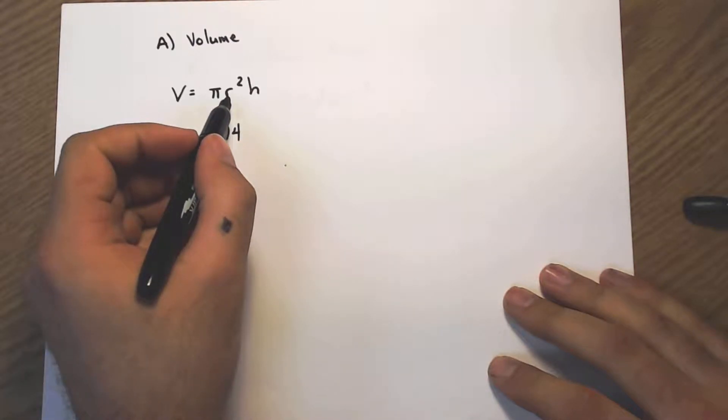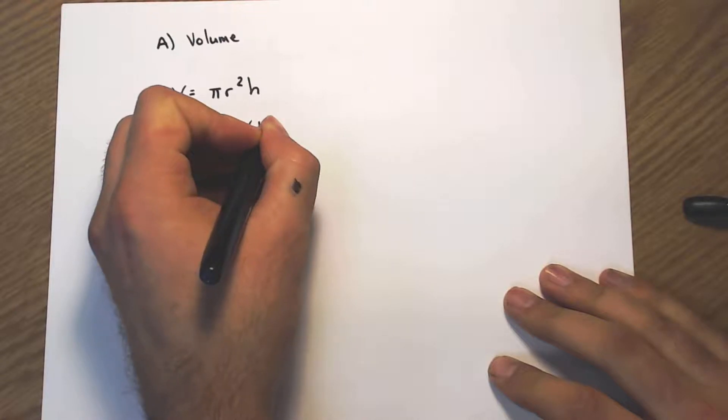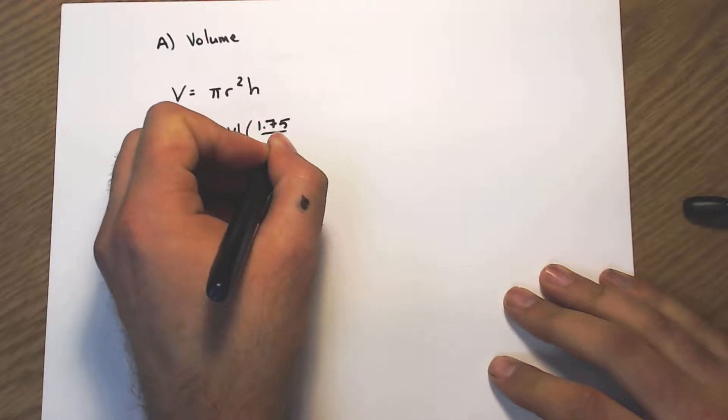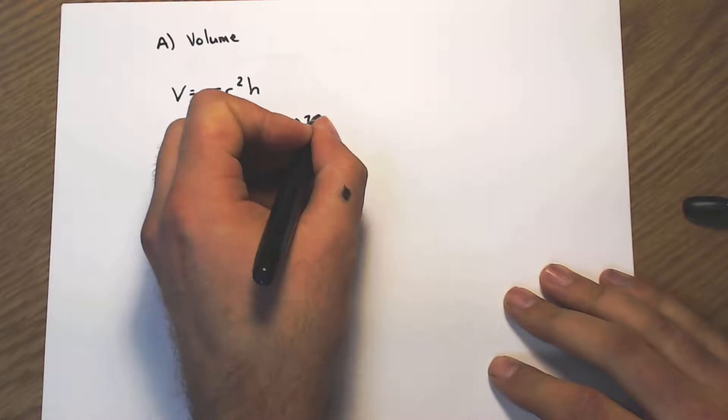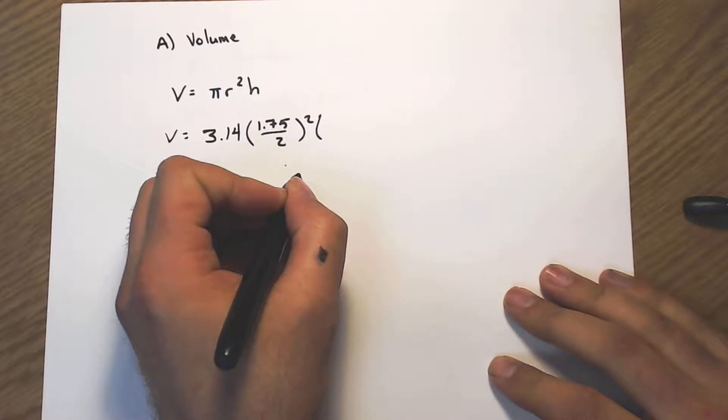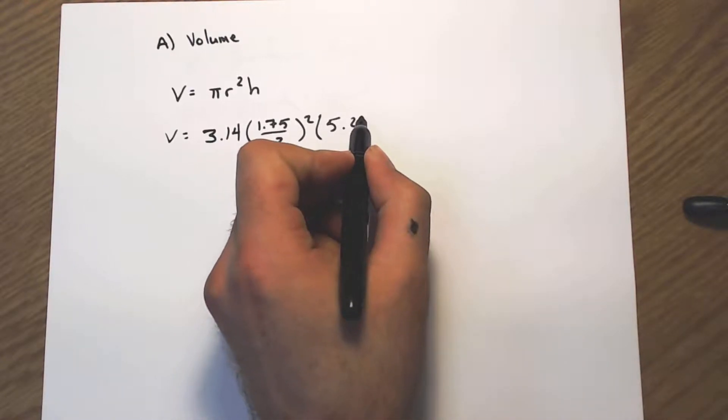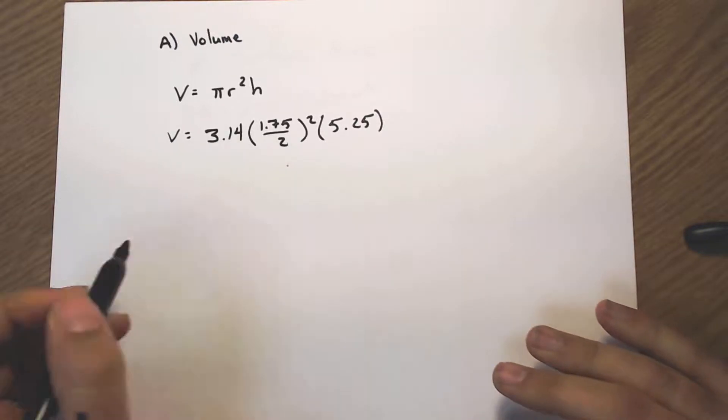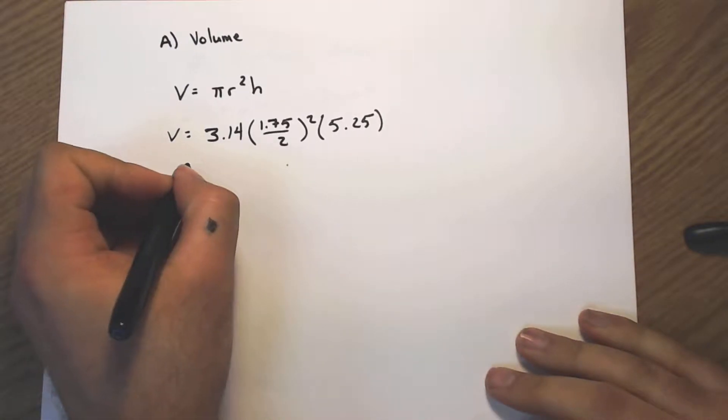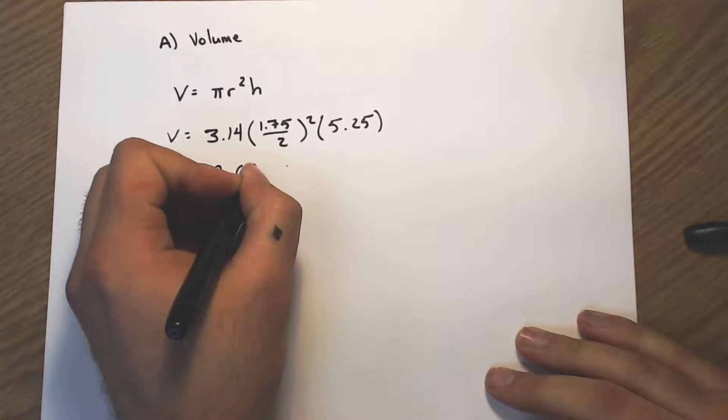Our r squared, well r is half of our diameter, so that's 1.75 divided by 2. We have to square that, then we have to multiply by our height, and our height in this case is 5.25.